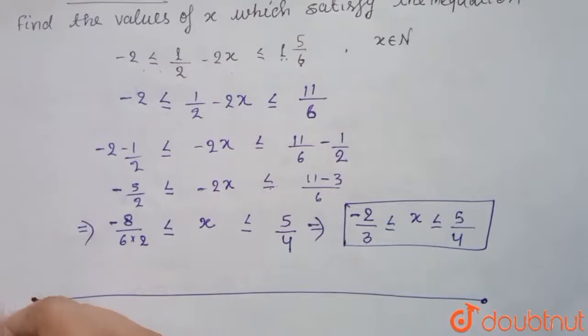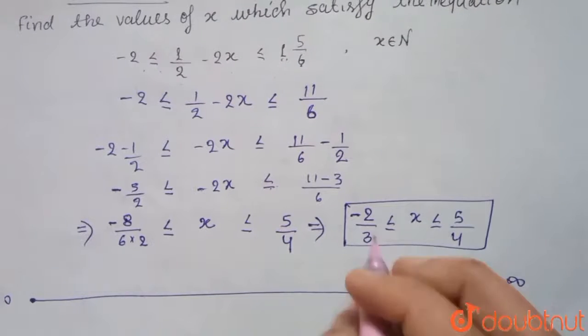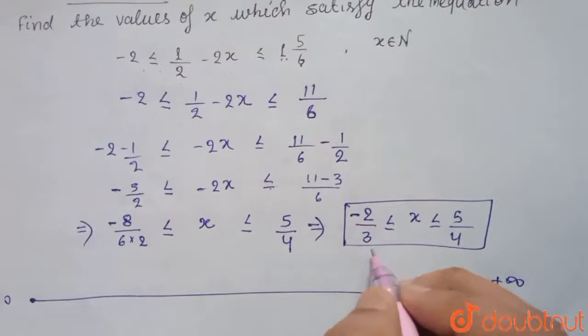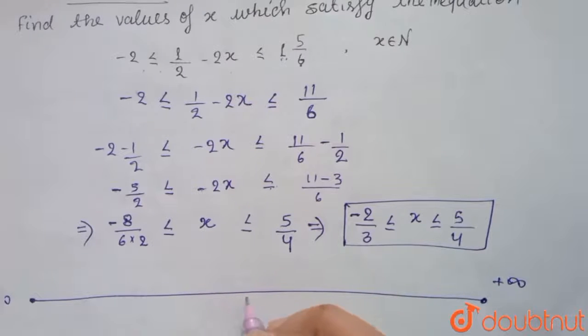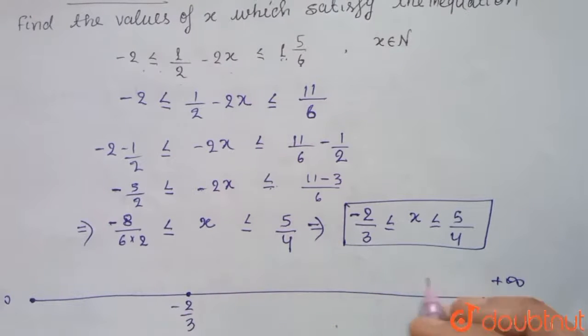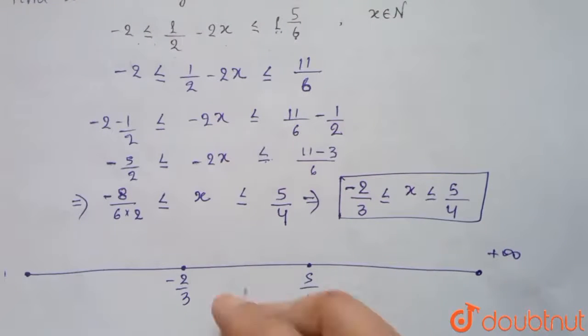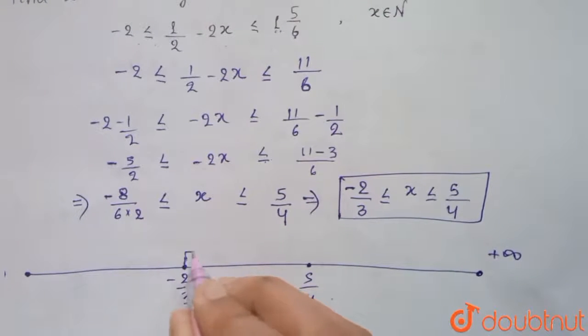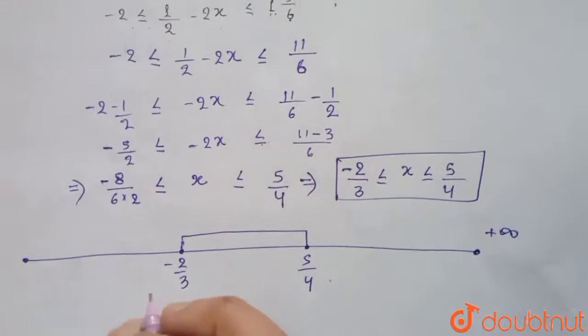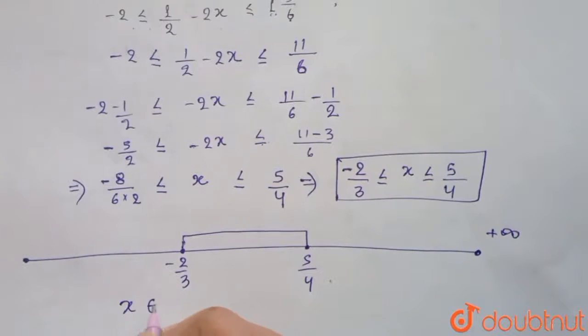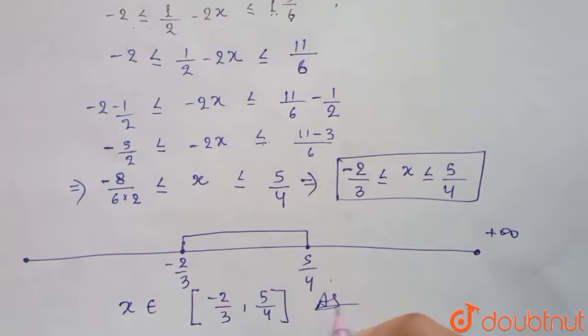So this is minus infinity and this is plus infinity. Let's mark point -2/3. So this will suppose this is our point -2/3 and this is our point 5/4. So we have solution for this interval that means our x belongs to closed interval -2/3 to 5/4. So this is our answer.